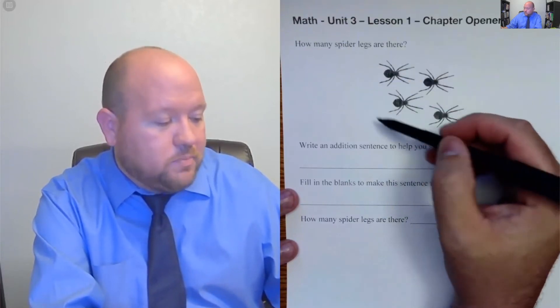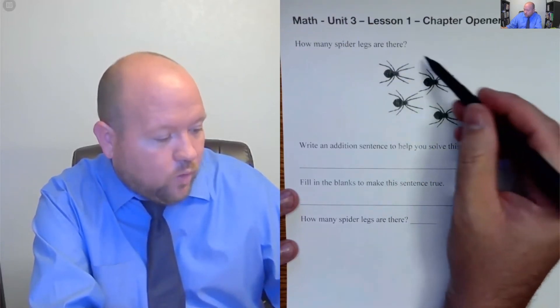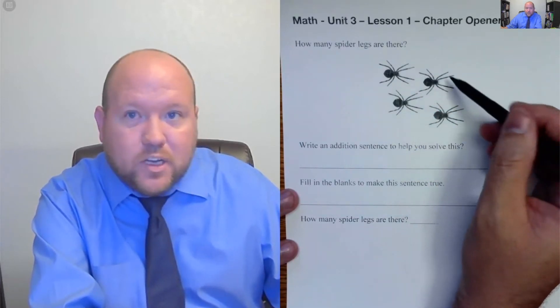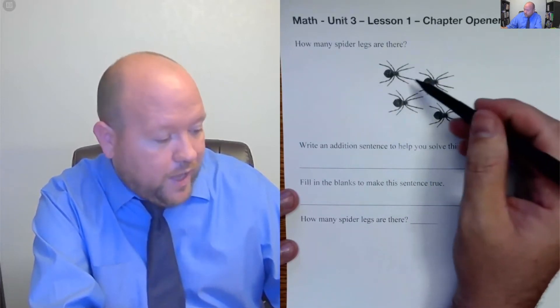A way to solve this is to think, well, how many spiders do I have? I have four. And how many are in each of those groups? The answer would be eight.